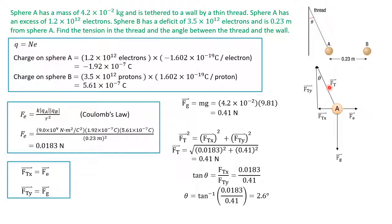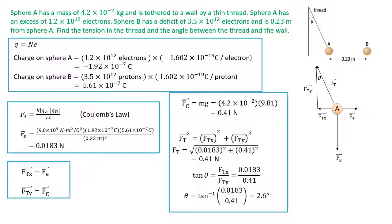So the magnitude of the tension force is 0.41 Newtons and the thread is 2.6 degrees relative to the wall. If you enjoyed this video, please give it a like and check out some of my other videos. Thank you.